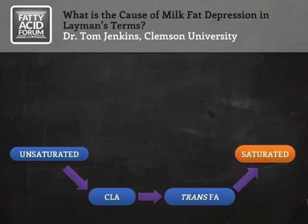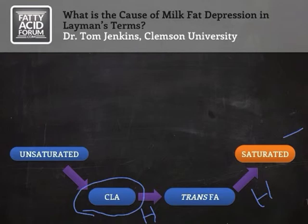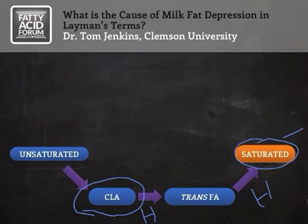The process of biohydrogenation does not occur directly in a single step from unsaturated to saturated. There are several intermediate compounds produced, and the first of these is a group we call CLA — conjugated linoleic acid. The microorganisms then add hydrogen to the CLAs, converting them to trans fatty acids, then add more hydrogen and convert these to saturated fatty acids. At any point in time, you'll find all four of these flowing out of the rumen into the small intestine and eventually into the blood — mostly saturated fatty acids, but with small amounts of CLAs and trans fatty acids.